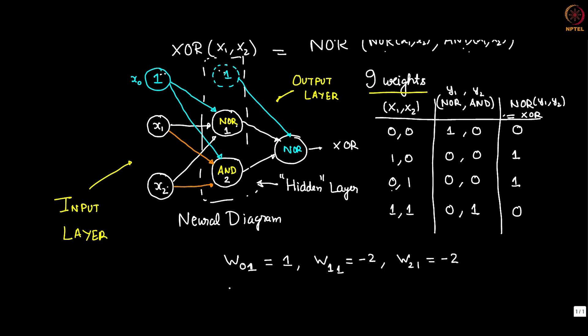Similarly, we have these weights which are the weights of the AND gate. This was from NOR. Now this is the second unit 2, this is minus 3, W12 which is 2, W22 which is 2.